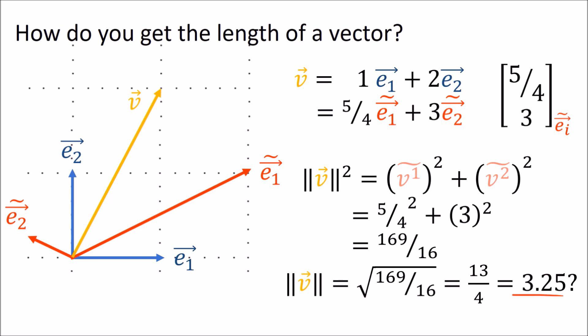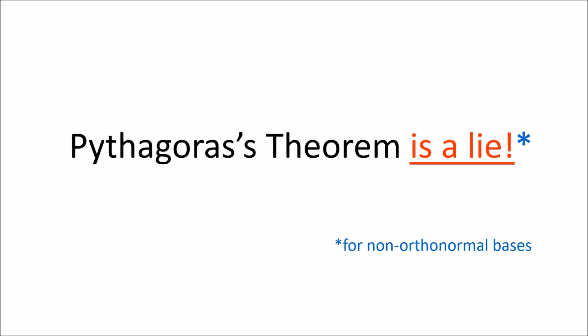So what's up here? Why didn't we get the square root of 5 like we were expecting? The reason we messed up is that we used the side lengths of this triangle here, where one side is given by v and the other two sides are parallel to e1-tilde and e2-tilde — and that isn't a right-angle triangle. So really, Pythagoras' theorem is a bit of a lie for non-orthonormal coordinate systems: it only works when the basis vectors have length 1 and are at right angles to each other.